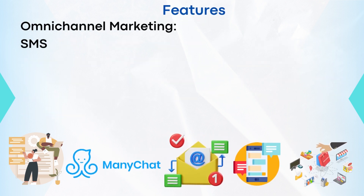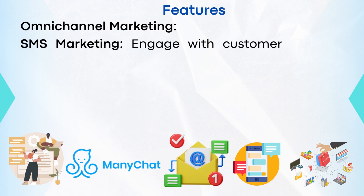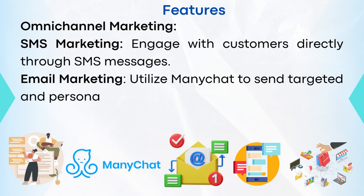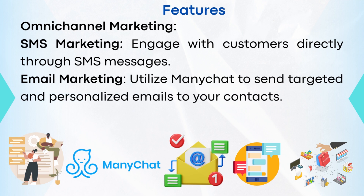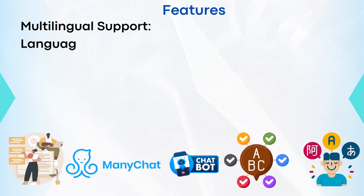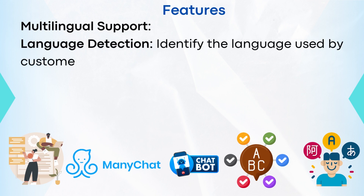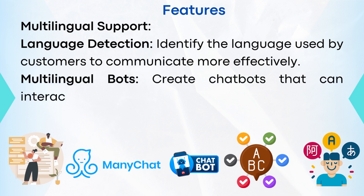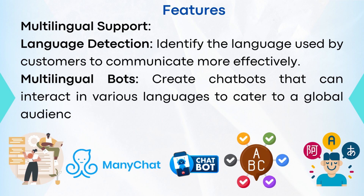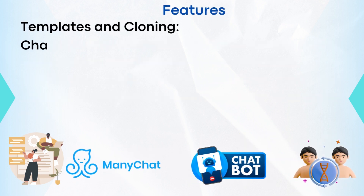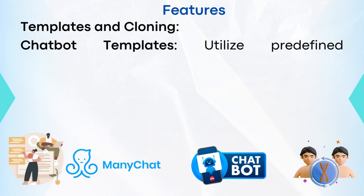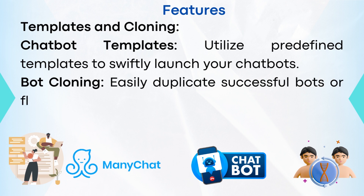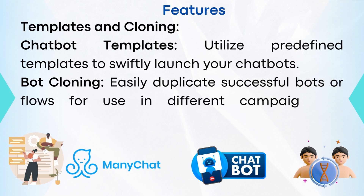Number eight: omni-channel marketing. SMS marketing lets you engage with customers directly through SMS messages. Email marketing lets you utilize ManyChat to send targeted and personalized emails to your contacts. Number nine: multilingual support. Language detection identifies the language used by customers to communicate more effectively. Multilingual bots allow you to create chatbots that interact in various languages to cater to a global audience. Number ten: templates and cloning. Chatbot templates let you utilize predefined templates to swiftly launch your chatbots, and bot cloning lets you easily duplicate successful bots or flows for use in different campaigns or platforms.